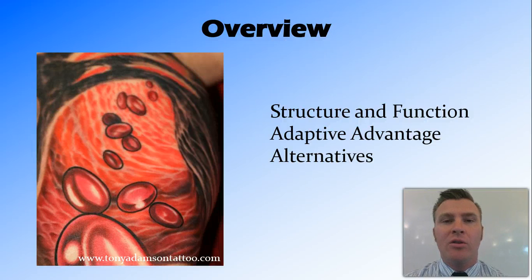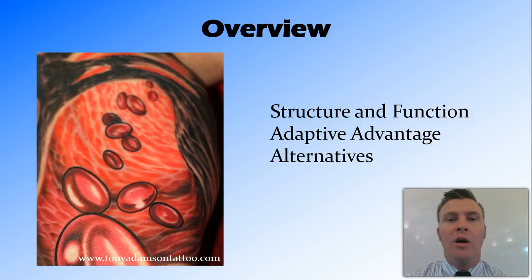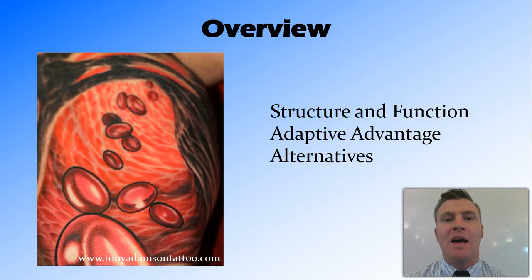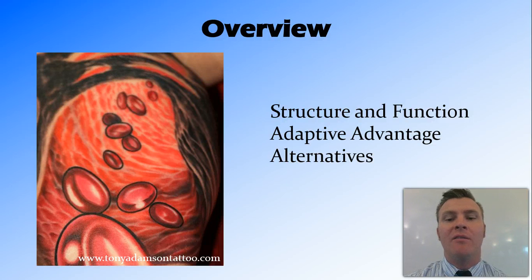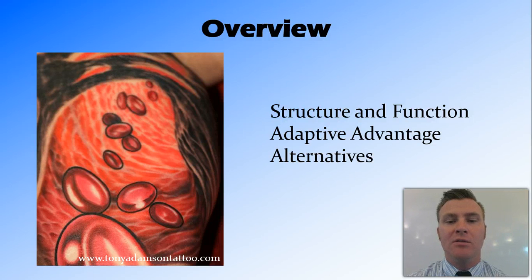In this video, we've looked at the structure and function of haemoglobin — being made of four iron-containing haem molecules surrounded by four globin molecules, two alpha and two beta. We've looked at the adaptive advantage, being that a much larger amount of oxygen can be carried around the body by having haemoglobin, giving those animals that have it an advantage by being able to provide more oxygen to their cells. And we've looked at some of the alternatives found in animals that don't have haemoglobin, such as haemolymph.